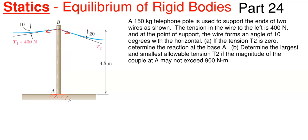This means we are going to have a horizontal force reaction A sub x, a vertical reaction A sub y, and a moment reaction A sub m. For all three reactions at this fixed end at A, we just assume direction: A sub x is to the right, A sub y is upward, and A sub m is clockwise.